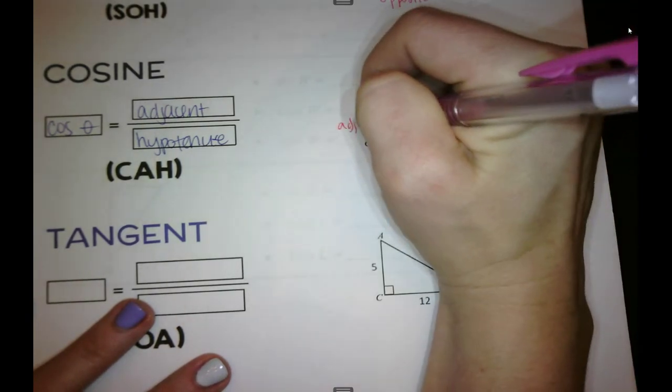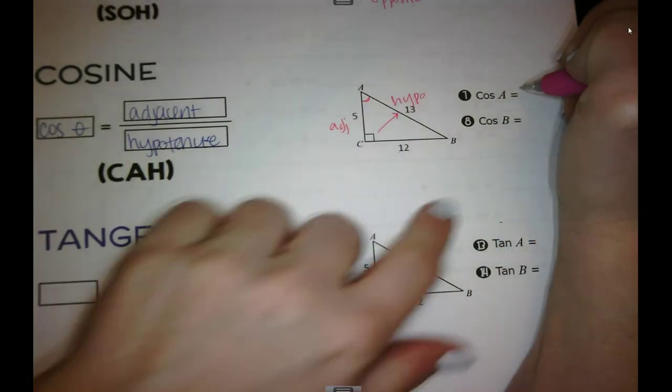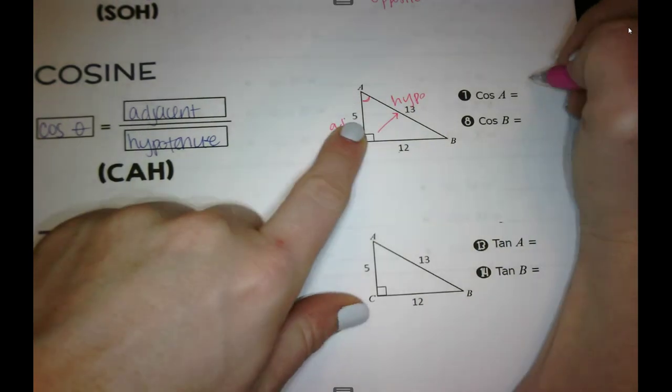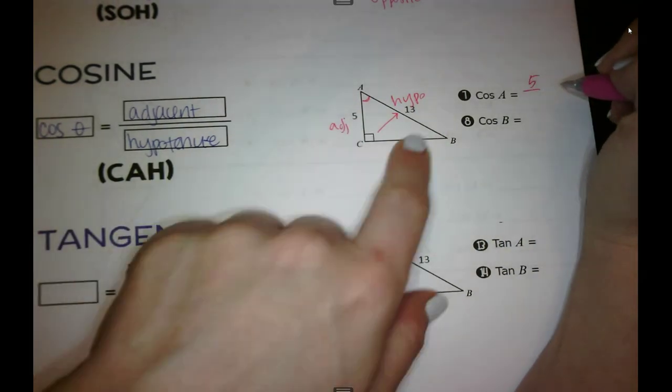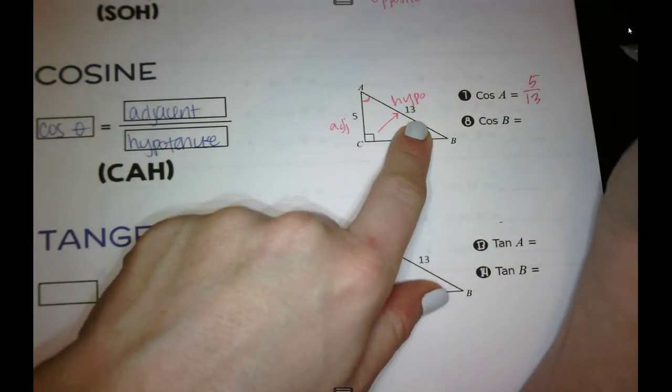So this is our adjacent. So cosine of A is adjacent over hypotenuse. 5 over 13.